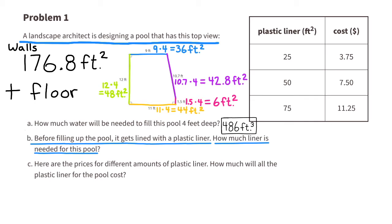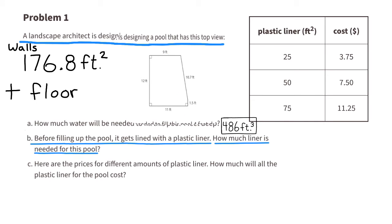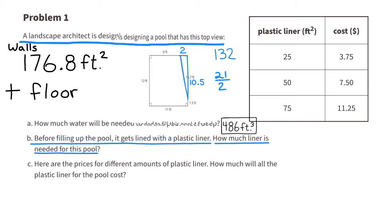We'll add the wall area to the area of the floor. To find the floor area, I'll treat this shape like a rectangle first and then subtract the small triangle sliver from the side. I'll use the dimensions 12 by 11, which gives me 132. For the little triangle, dimensions are 2 by 10.5, which is 21, and divided by 2 gives 10.5. Subtracting from 132 gives 121.5 square feet for the floor.